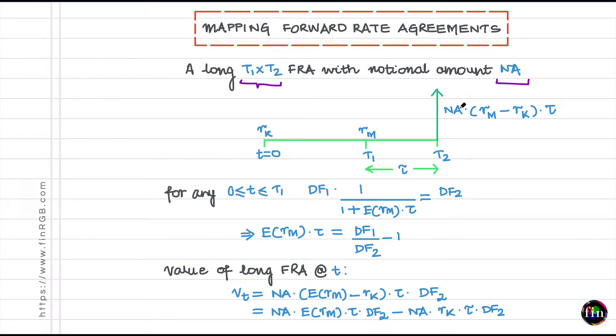You will receive an amount which is NA times the difference between RM and RK. RK was pre-agreed, it was decided at time T equal to 0. RM was the market rate which was observed at time T1. So, NA times RM minus RK further scaled by tau which is the time in years between T1 and T2. Again, this RK was fixed in such a way so that the value of this FRA was 0 at the time it was initiated.